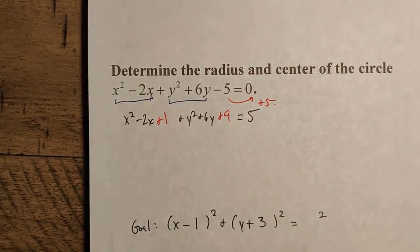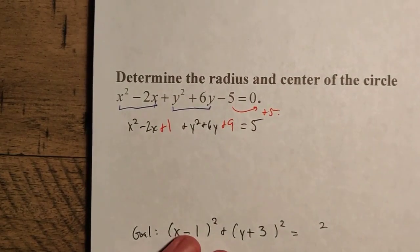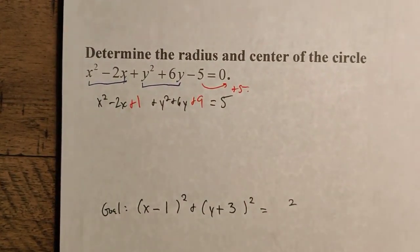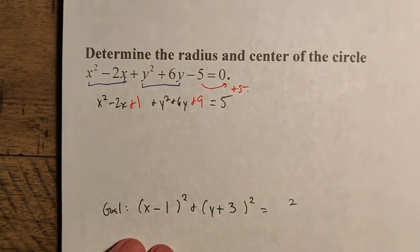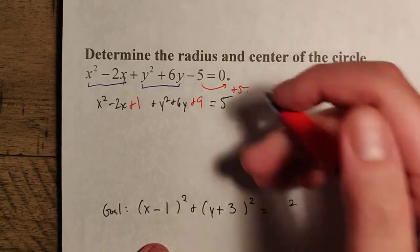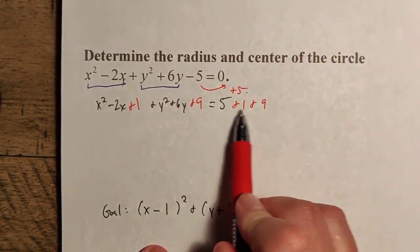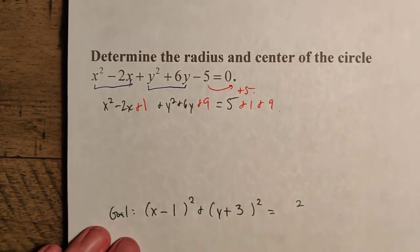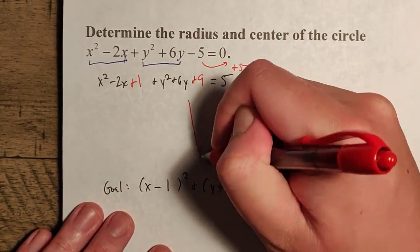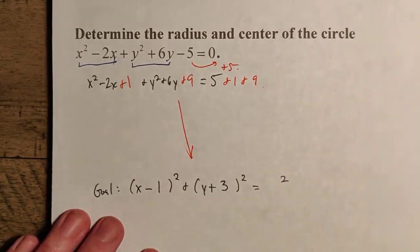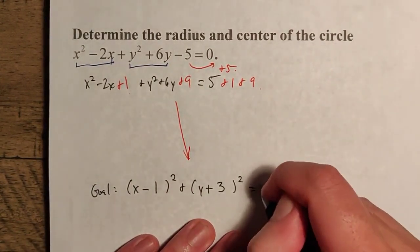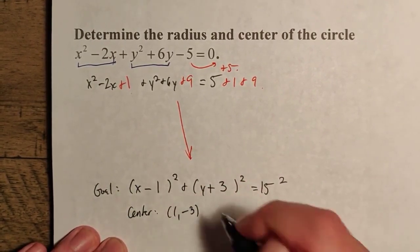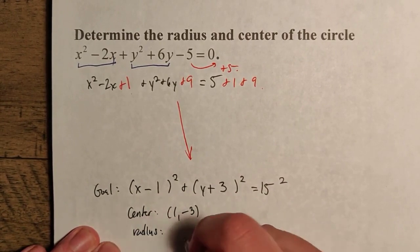Notice what's happening: by introducing a +1 and a +9, we've unbalanced the equation — we've added 10 to one side. So we must add the same quantity to the other side as well, making it 5 + 1 + 9 = 15. So now it's clear: the center is the point (1, -3) and the radius is radical 15.